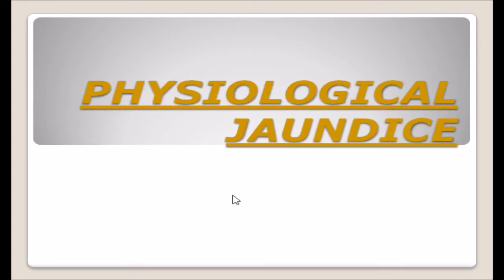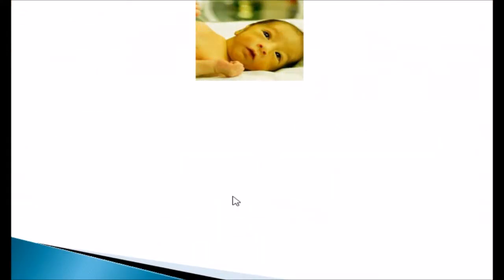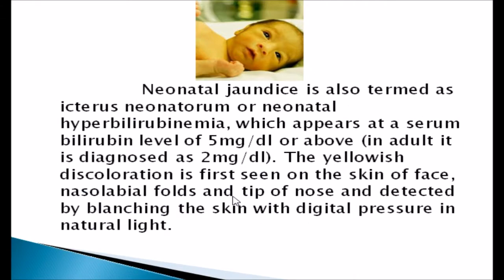Today's topic is physiological jaundice. Physiological jaundice is one type of neonatal jaundice — the jaundice that happens within one month of age. Neonatal jaundice is also termed icterus neonatorum or neonatal hyperbilirubinemia. It appears when the serum bilirubin level is 5 mg/dL or above, whereas in adults jaundice is diagnosed at 2 mg/dL or above. In neonates the threshold is 5 mg/dL or above.